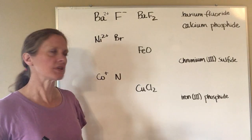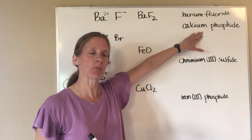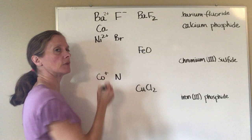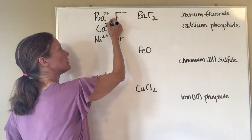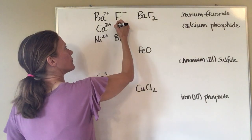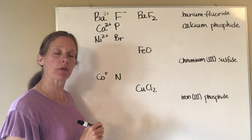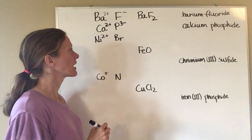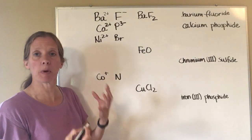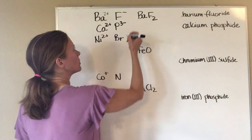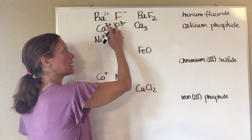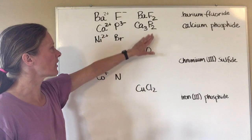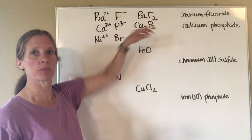On the second row, you're given the name and need to work backwards to find the formula. We have calcium phosphide. Calcium is also in the second column, so it has a positive two charge. Phosphide is in the same column as nitrogen, so it has a negative three charge. To balance, I need three calciums — three times positive two gives positive six — and two phosphides — two times negative three gives negative six — which adds up to zero. The formula is Ca₃P₂.